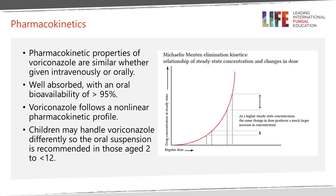The pharmacokinetic properties of voriconazole are similar whether it's given intravenously or orally, which is quite useful. It's well absorbed, with over 95% oral bioavailability. One important thing to bear in mind is that voriconazole follows non-linear pharmacokinetics. This means doubling the dose doesn't necessarily mean you'll get double the level in the blood — it can be quite exponential. You could double the dose but get four times the plasma levels. So dose increments when increasing should be kept small.